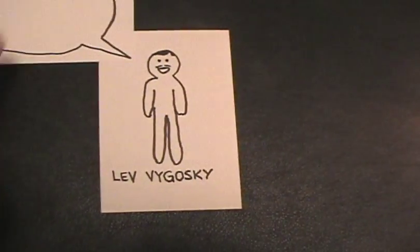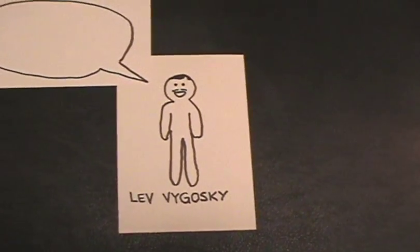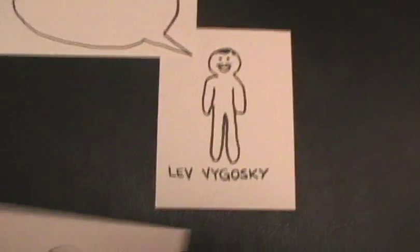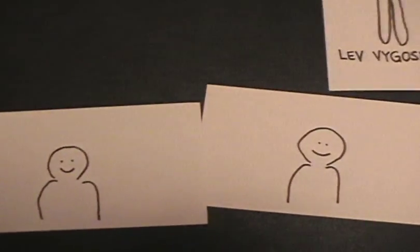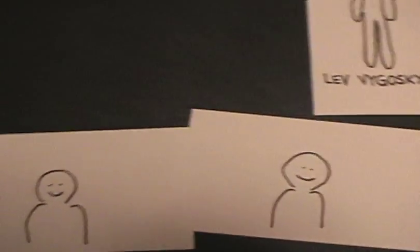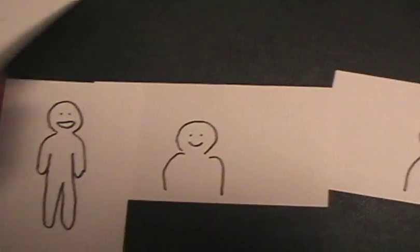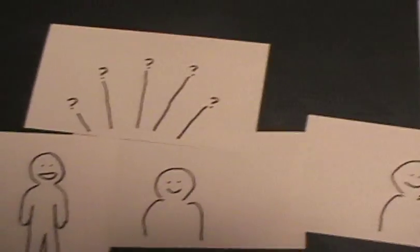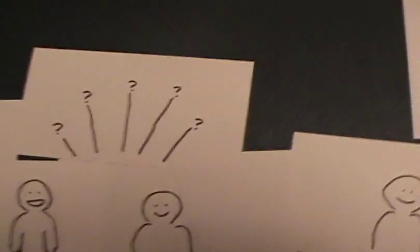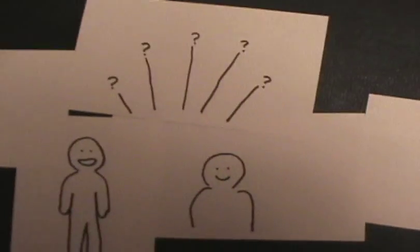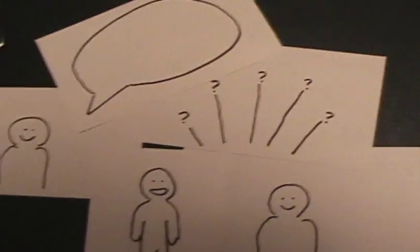Lev Vygotsky was a constructivist who said we should focus on how people learn in situations. Learners come together and help to create knowledge. Instructors become guides, mentors, or fellow adventurers. Everybody asks questions. Everybody interacts. Everybody finds their voice and learns.